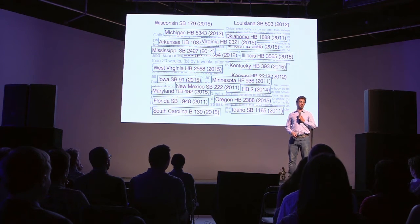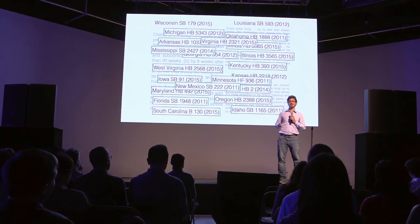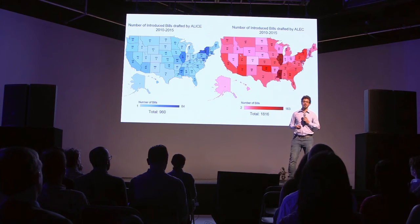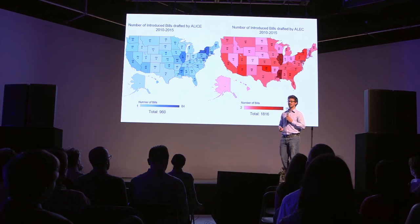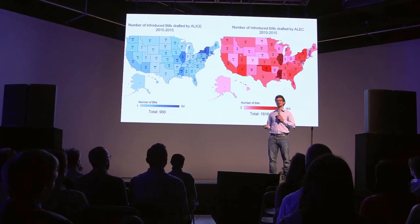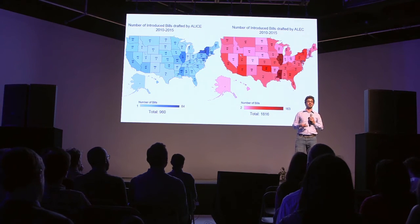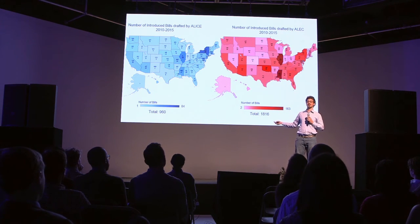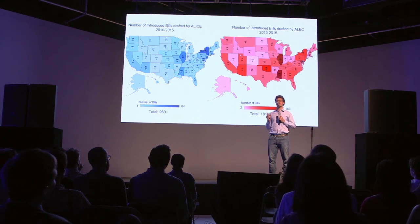Because LID is a real-time system, it enables users to answer questions that would have previously taken months, if not years, and lots of tedious work to answer. This summer, we were interested in understanding the influence of interest groups on state politics. It's already well-known that interest groups have a lot of success in writing bills and getting them passed by state legislatures. However, it is less well-known how much success they actually have. So we collected over 1,000 bills from the websites of ALEC, a conservative interest group, and ALIS, a liberal interest group, and fed them into our system, LID. We were able to determine how much success these organizations have had in each state for the past five years.